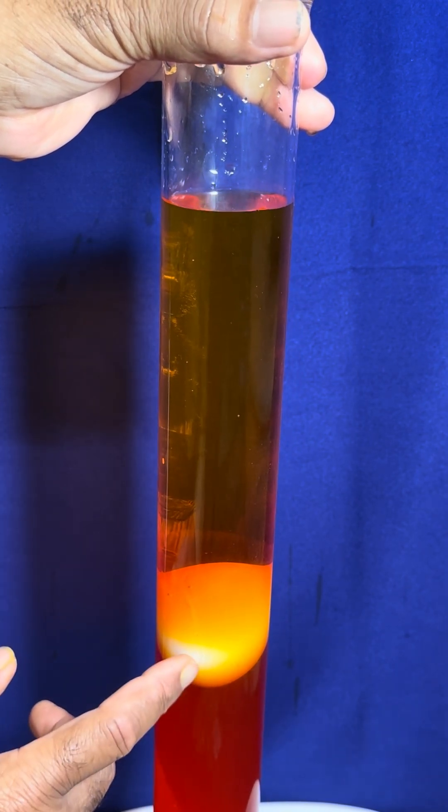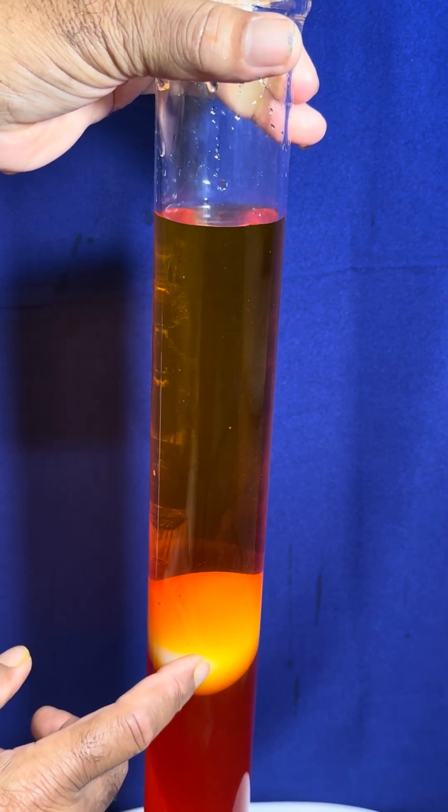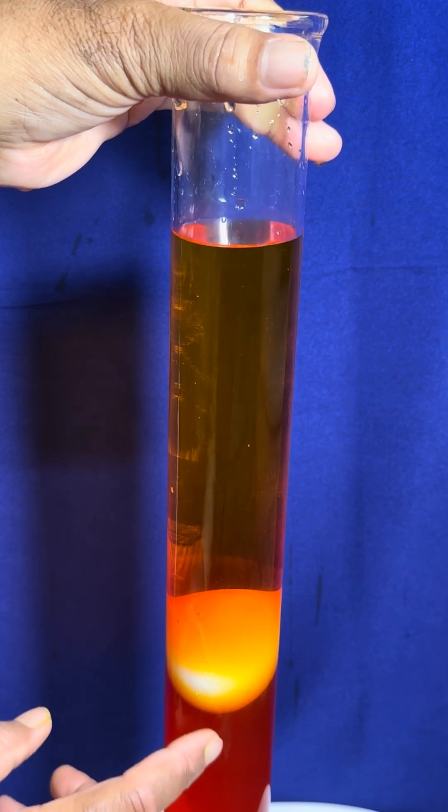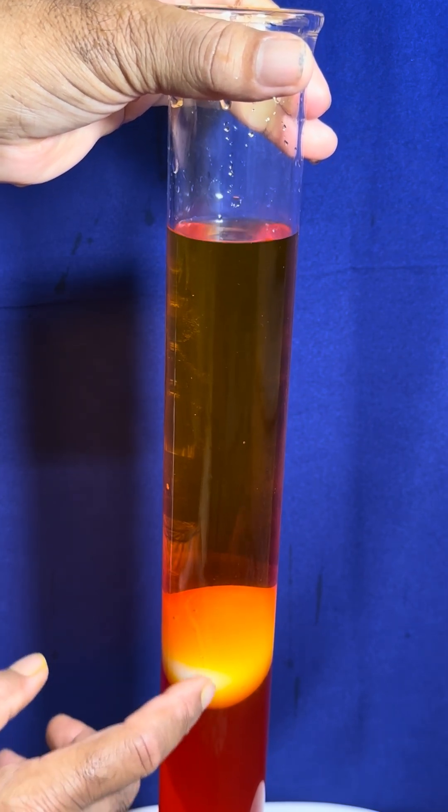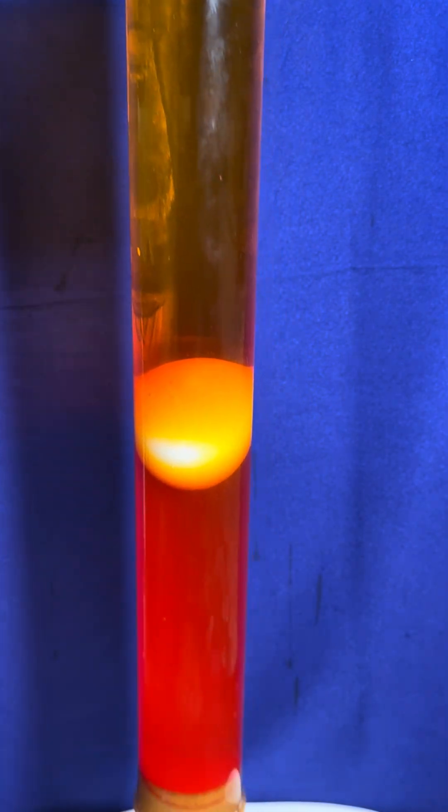The egg has a density in between these two liquids, which is why it floats above the denser liquid and below the lighter liquid. Thank you for watching.